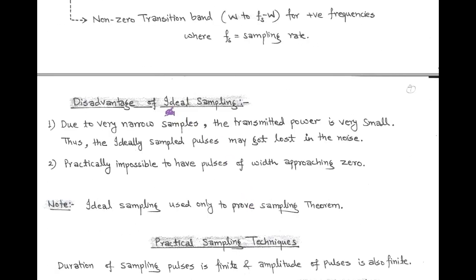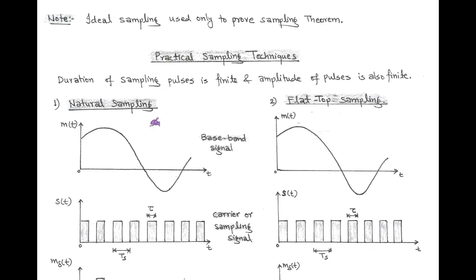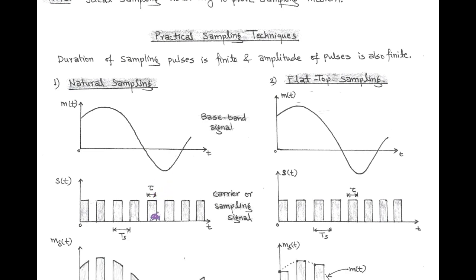Next, we talk about the disadvantages of using ideal sampling. As we know, in ideal sampling we use a periodic impulse train. And due to very narrow samples, the transmitted power is very small. As a result, the sampled pulse may get lost in the noise. Second, in practice, it is impossible to have pulses of width approaching zero. So ideal sampling is used only to prove the sampling theorem. But in practical sampling, we use a periodic pulse train having a width of tau. In practical sampling, the duration of the sampling pulse is finite, and the amplitude of each pulse is also finite. So the practical sampling techniques are of two types: first is natural sampling, and second is called flat-top sampling.